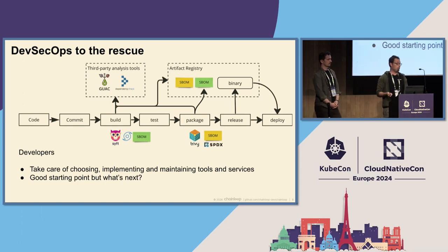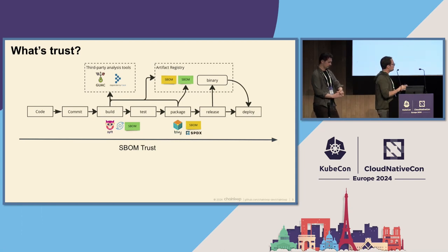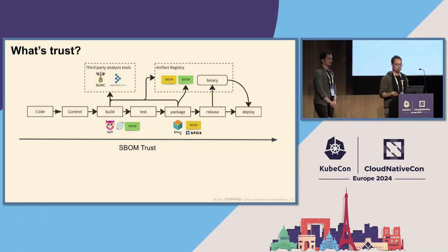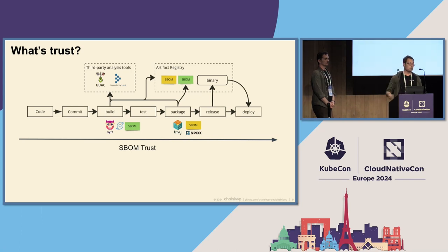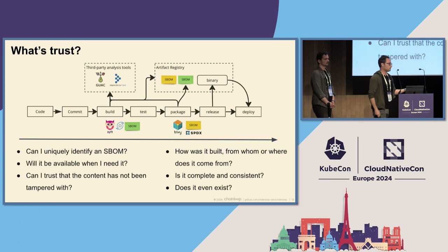This is a good starting point, but today what we want to be talking about is challenging this vision — what we call SBOM trust, or build material trust — all the way from generation to distribution or analysis. We know that SBOM trust is a very overloaded term, so the easiest way to come up with what we're looking for is just to ask questions.